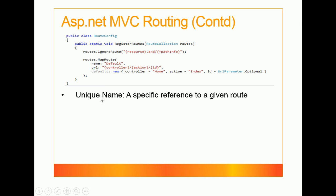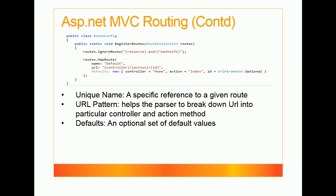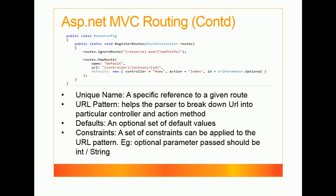Some key things about routing: the unique name, which is 'default' here, specifies a specific reference to a given route. The URL pattern helps the parser break down the URL into a particular controller and action method. We can specify our own convention — for example, action/controller — or define custom MVC routing. Defaults provide an optional set of default values, and we can also apply constraints to the URL pattern.